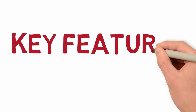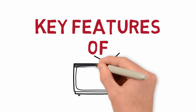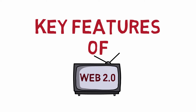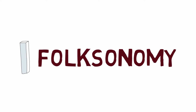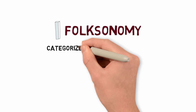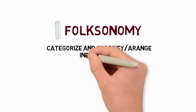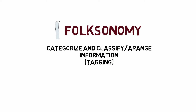Let's talk about the features of Web 2.0. The key features of Web 2.0 include: First, Folksonomy — it allows users to categorize, classify, or arrange information using freely chosen keywords. An example of this is tagging.